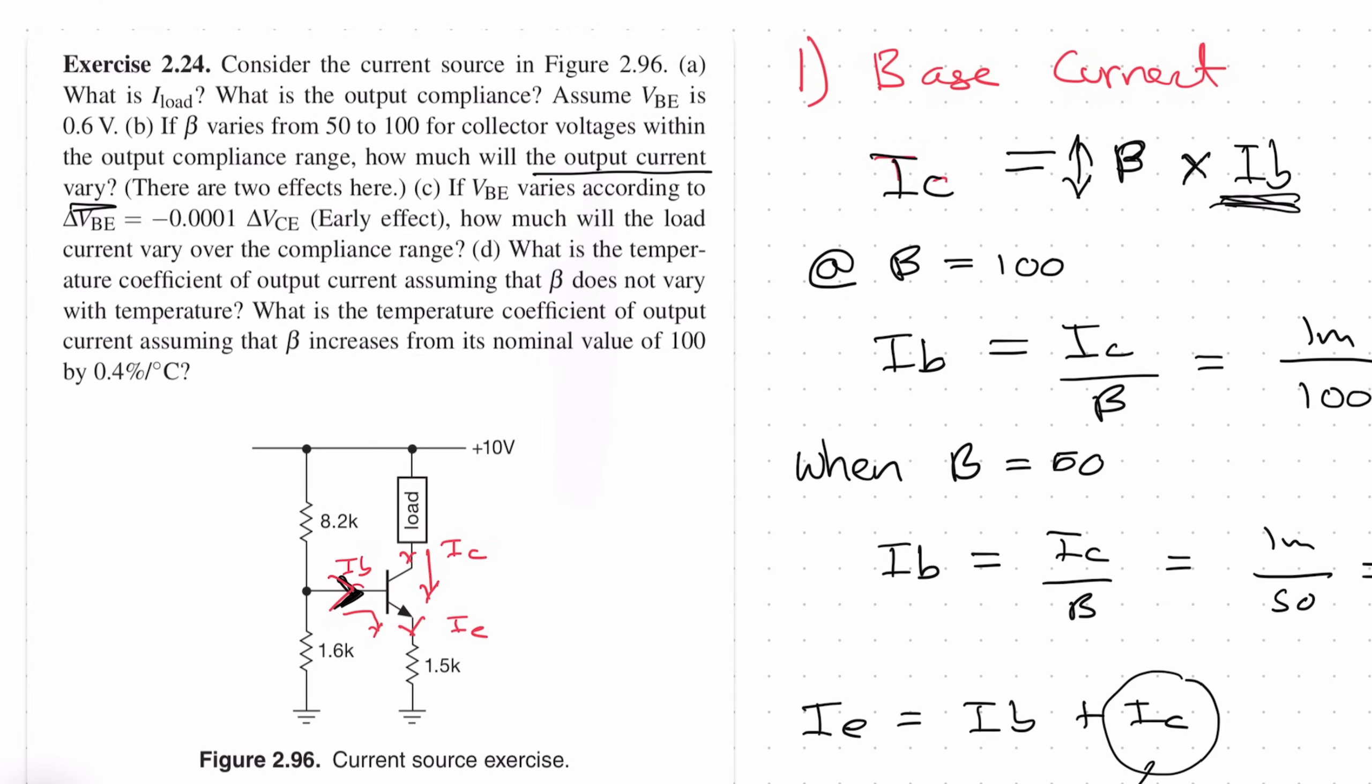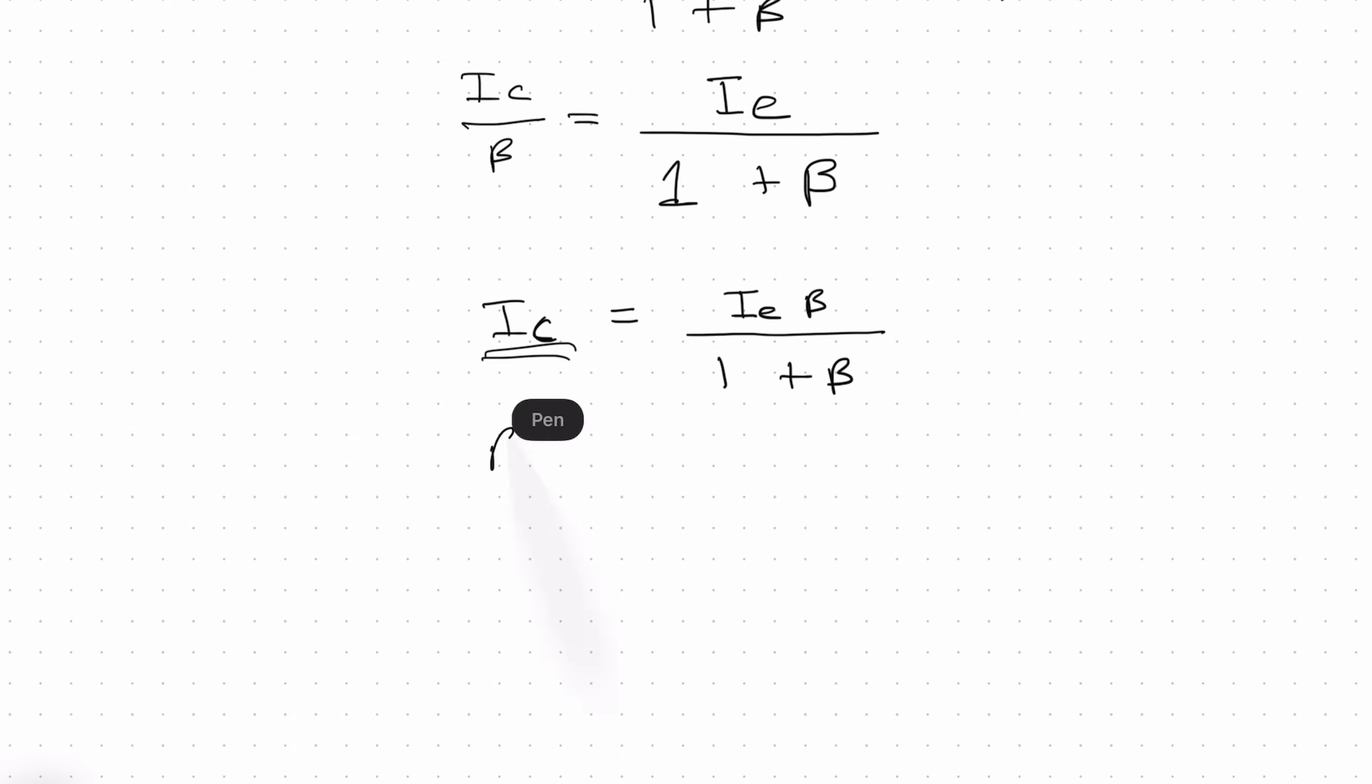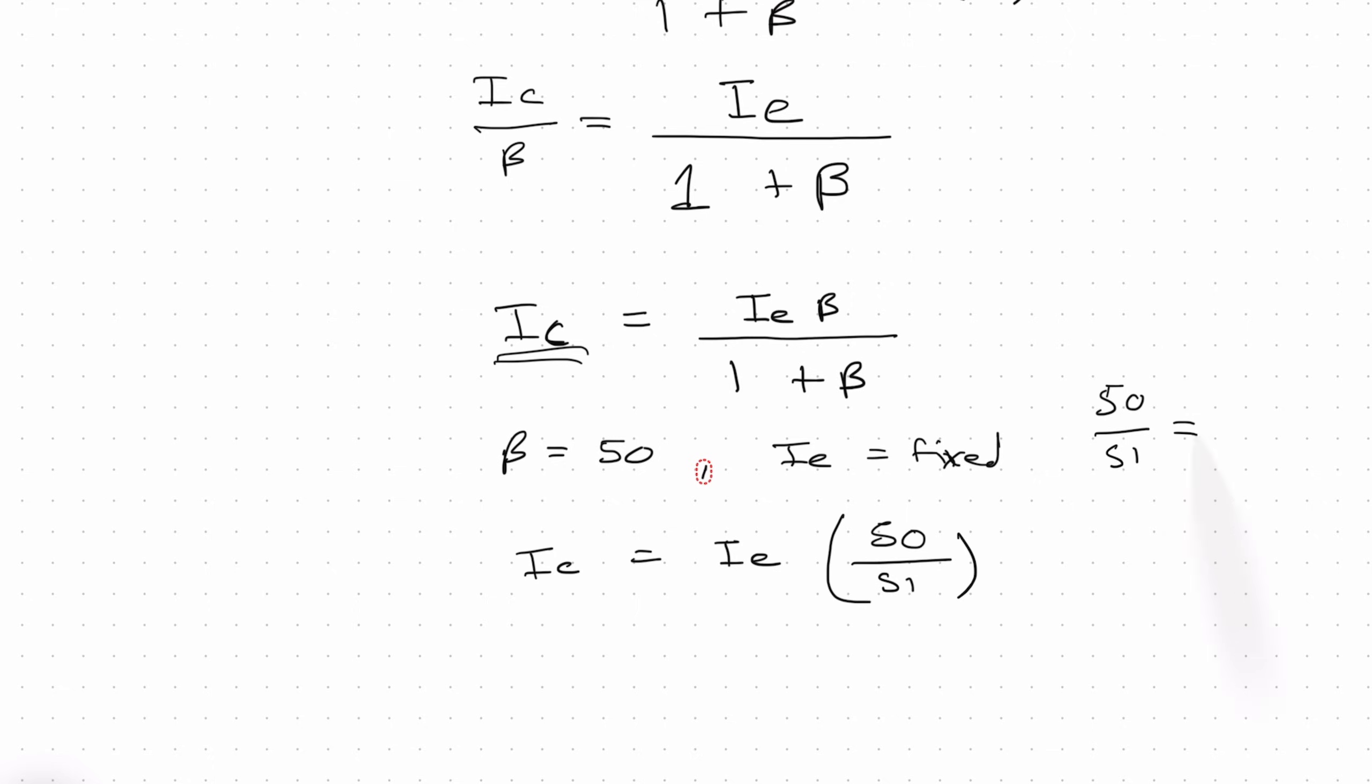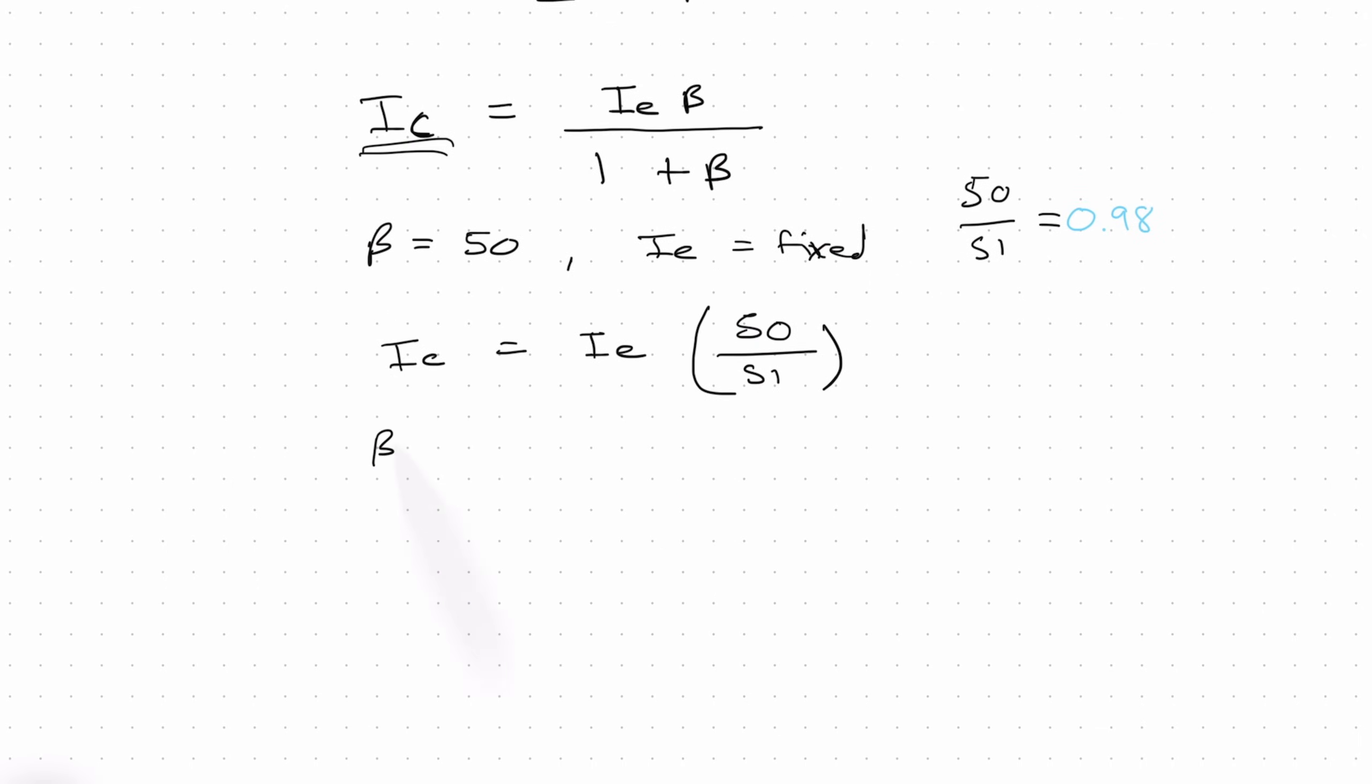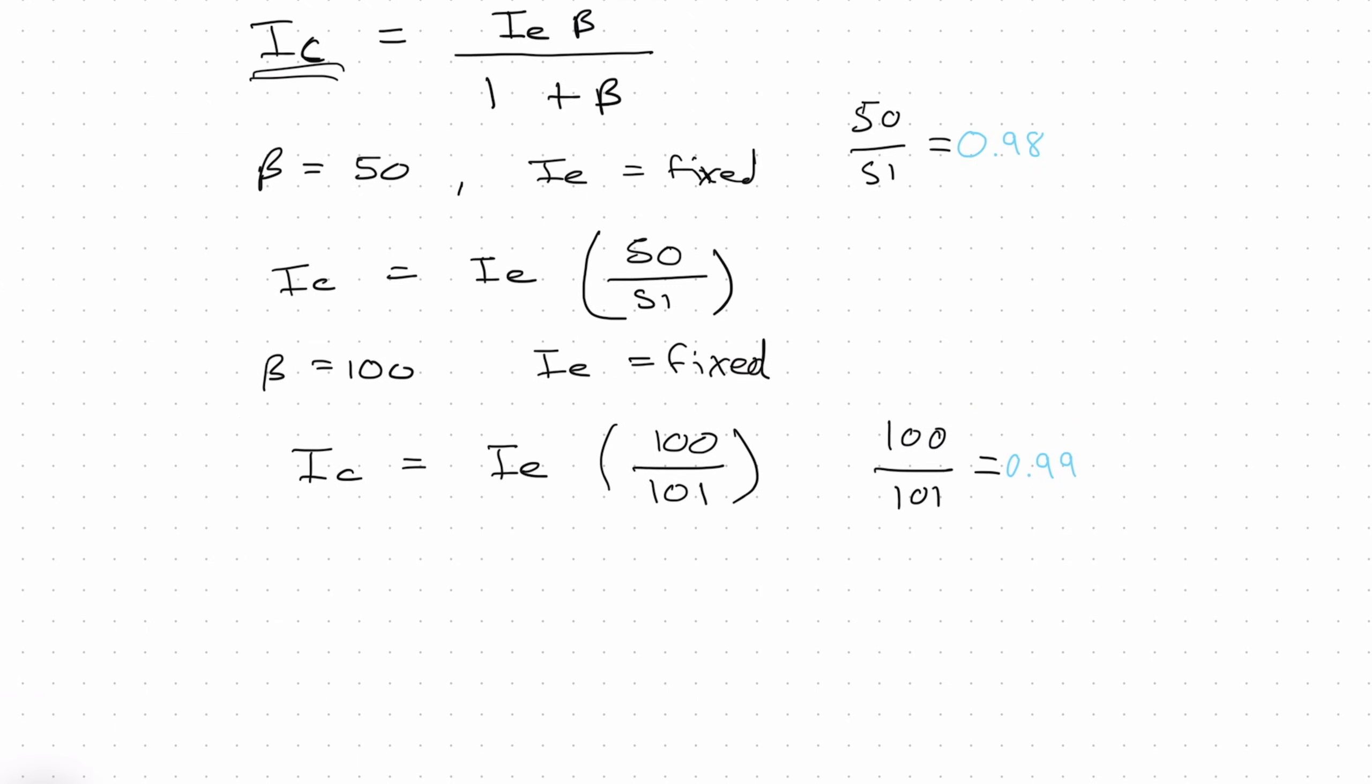Now I'm going to substitute number one into this equation over here. So taking this part and replacing this. So IC divided by beta is equal to IE over one plus beta. Now if you rearrange this to get IC by itself, we basically get IC is equal to IE times beta over one plus beta. So if you look back to the question, we need to calculate how the output current will vary if the beta varies. So obviously, we've got output current over here, and we've got beta over here as well. So we basically plug in the numbers for beta equals 100, and beta equals 50. So 50 divided by 51 is equal to 0.98. And if you do the beta case for 100, and IE again is fixed, we get IC is equal to IE times 100 over 101. So 100 over 101 is equal to 0.99. So you can see that the current or the collector current or the load current varies by 1% if the beta changes from 50 to 100.